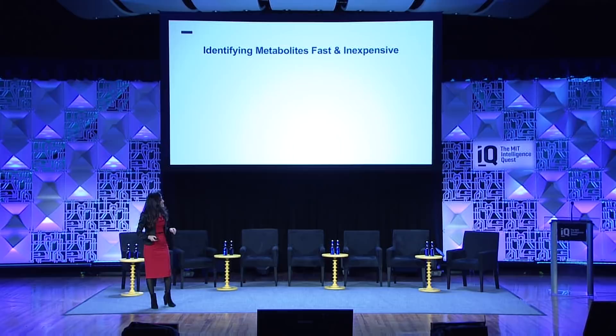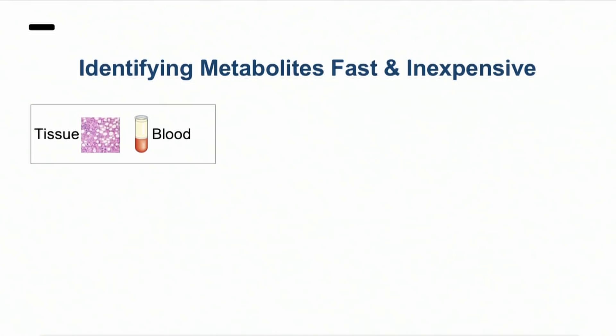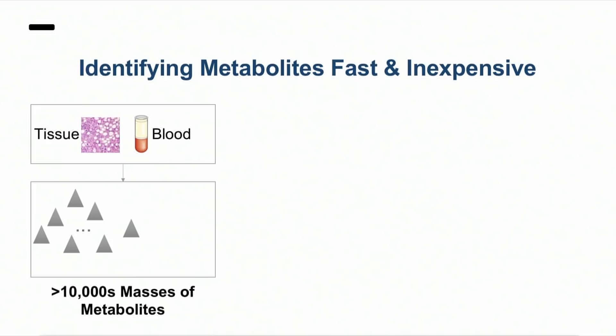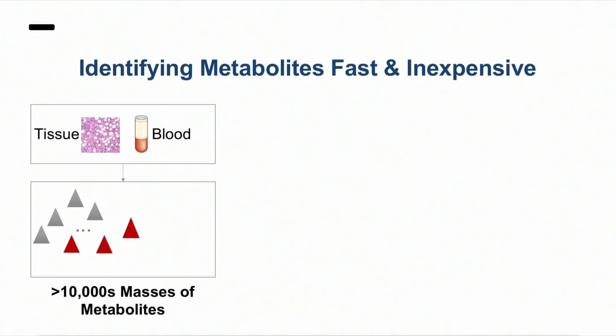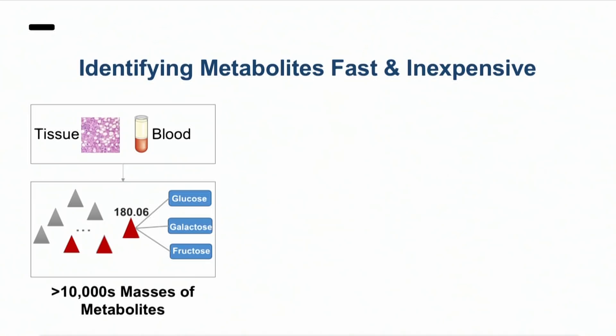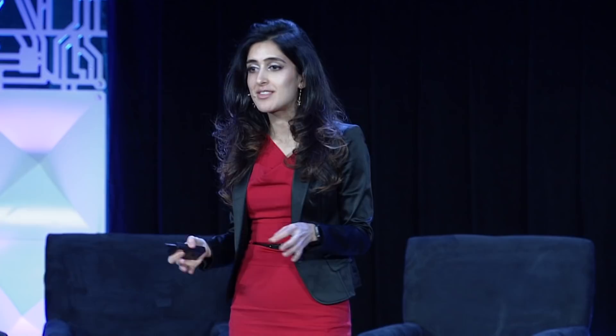We start from blood or tissues of patients. Using mass spectrometry, we can measure tens of thousands of metabolite masses. We see, for example, some of them are upregulated or downregulated in a disease. But the problem is that we don't know what they are, because there could be 10 metabolites with the same mass. For example, if we have a mass of 180, it could be either glucose, galactose, or fructose — they all have the same molecular mass but different functions in the human body. Current platforms have to do more experiments to figure this out.